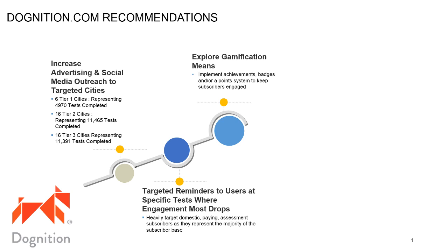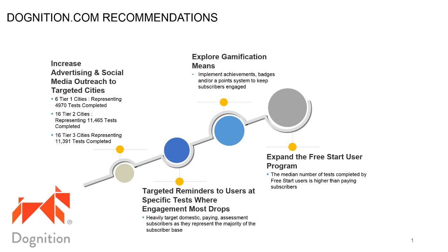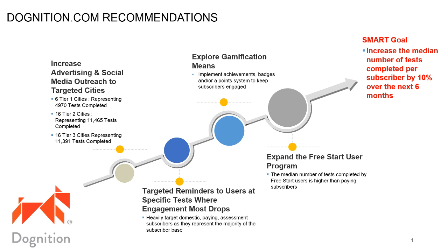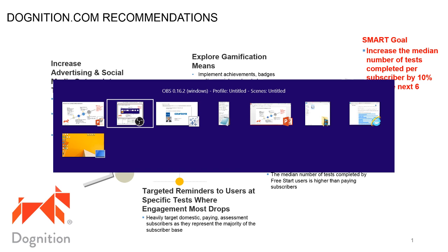I want to implement some sort of achievement badges and a point system to keep subscribers engaged — maybe a master trainer badge after your first 20 tests. Finally, I want to expand the FreeStart user program, since the median number of tests completed by FreeStart users is higher than paying subscribers. That gets us to our SMART goal: increase the median number of tests completed by subscriber by 10% over the next six months.